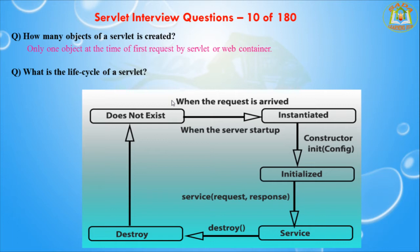There are five phases in the lifecycle of the servlet. The first phase is the servlet is loaded — whenever you are giving a request to the servlet, it loads the servlet. After that, the servlet is instantiated — when the request arrives, the servlet is instantiated.